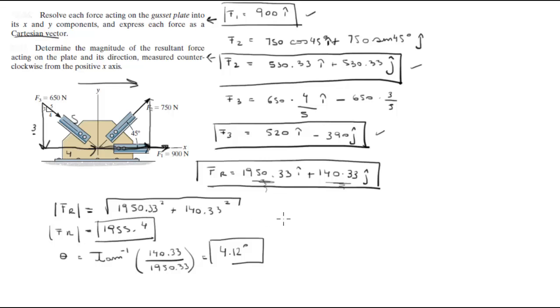So the final answer is going to look something like this: FR equals 1955.4 at an angle of 4.12 degrees. And this is the answer for the second problem. So final answer.